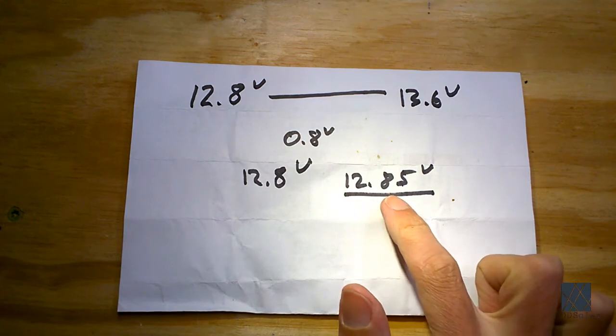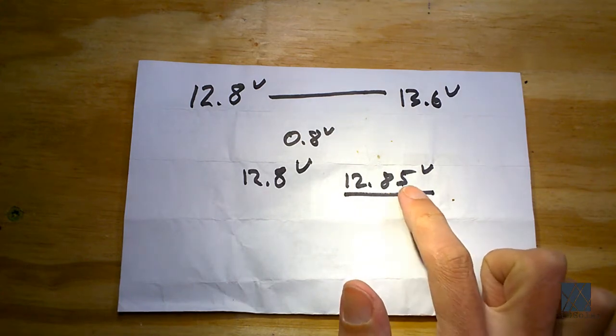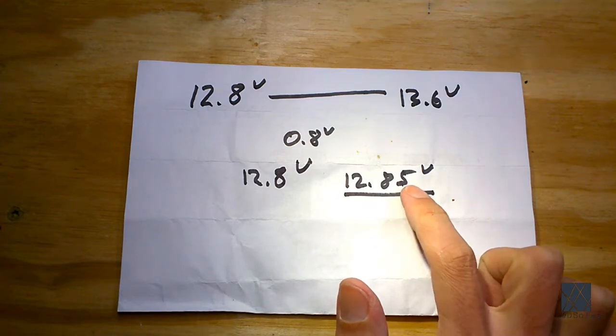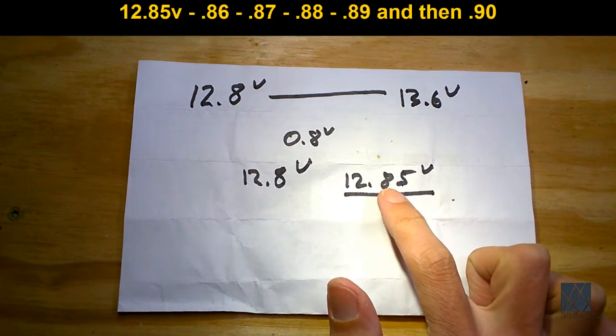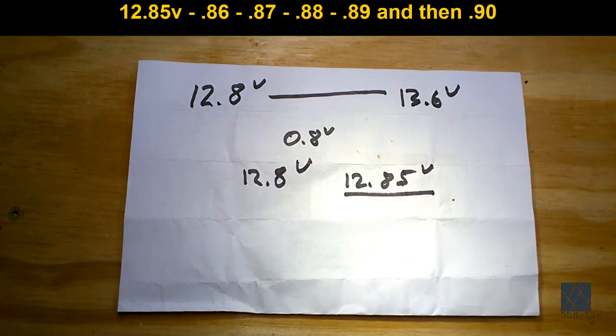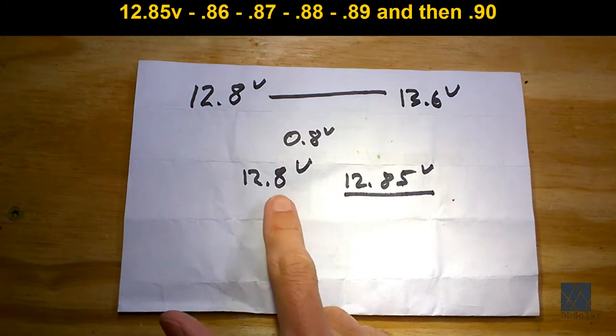So for the eight here to change over to a nine, this digit here would have to go from zero through nine and then it would go back to zero again and then this digit here would change to nine. So you're getting a lot more information on the display than you otherwise would with a voltmeter that only has one digit after the decimal place.